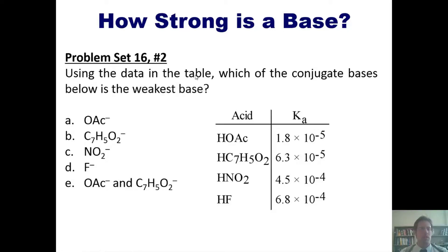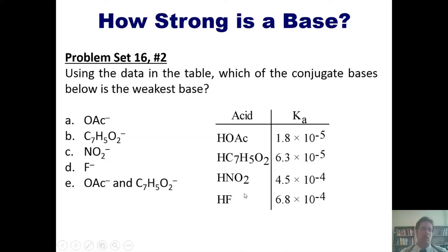Here's another problem: which of the conjugate bases shown is the weakest base? The weakest base comes from the strongest acid. We need to determine which of these acids is the strongest — that will be the one with the largest Ka. I'll let you figure that out on your own.